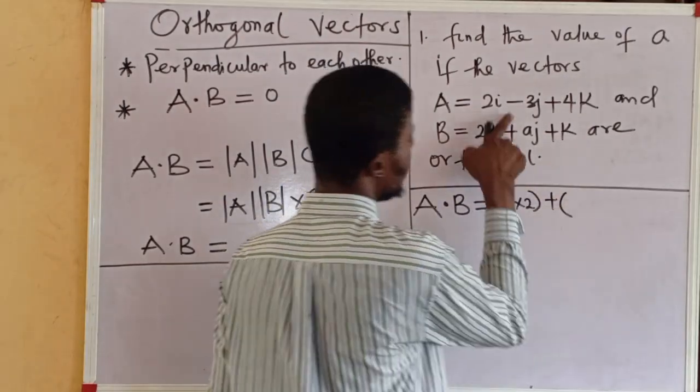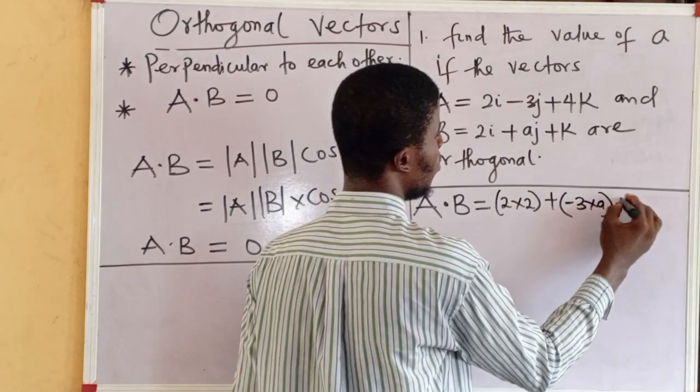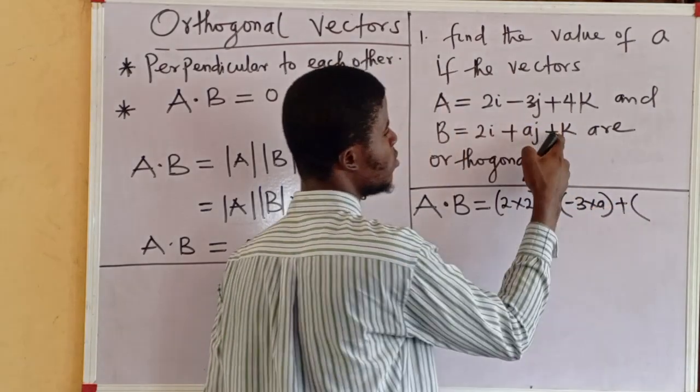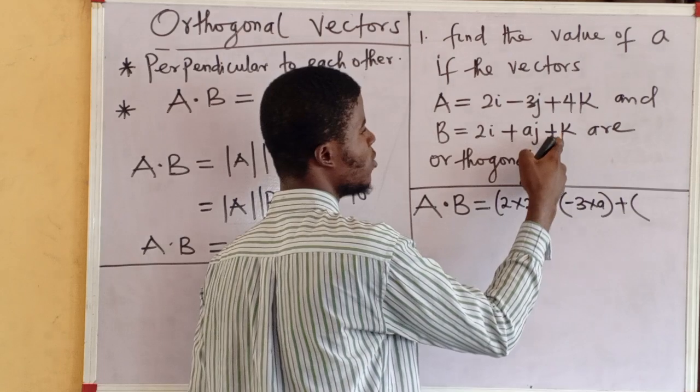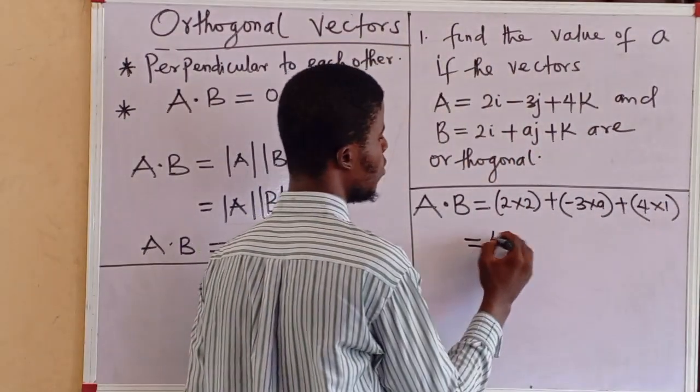It is 2 times 2, plus minus 3 times A, minus 3 times A, plus 4 times 1. The coefficient of k here is 1. 2 times 2 is 4.